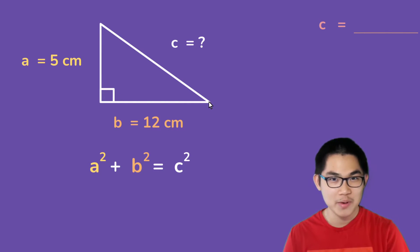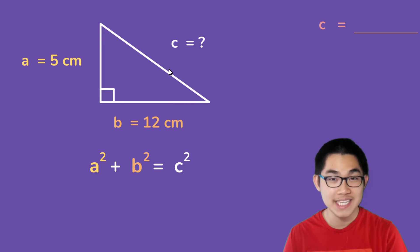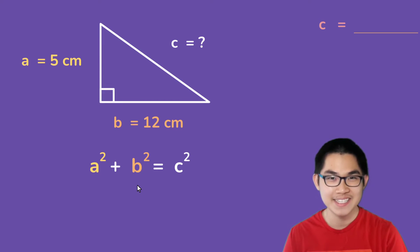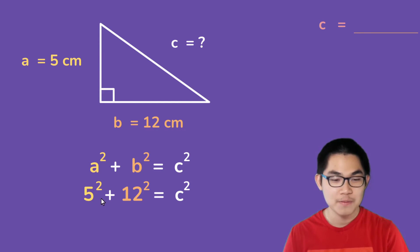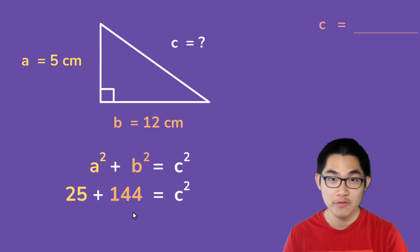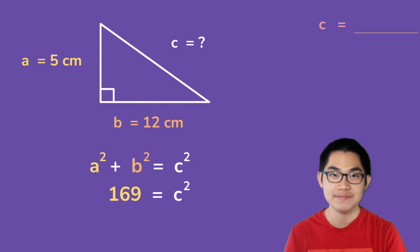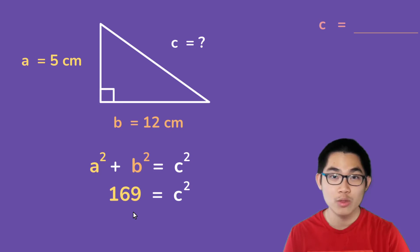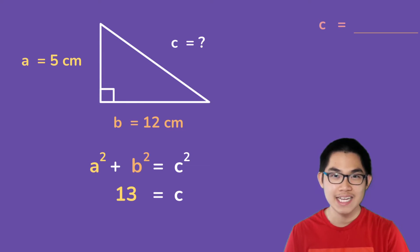So in this triangle, we know that a is 5 centimeters, b is 12 centimeters, but we don't know what c is. And because this is a right triangle, we can use this formula to find c. So we know that a is 5, b is 12. 5 to the power of 2 gives you 25, and 12 to the power of 2 gives you 144. And 25 plus 144 gives you 169. Now, to solve for c, all you need to do is take the square root of both sides of the equation. And we're left with c is equal to 13. And that is our answer.